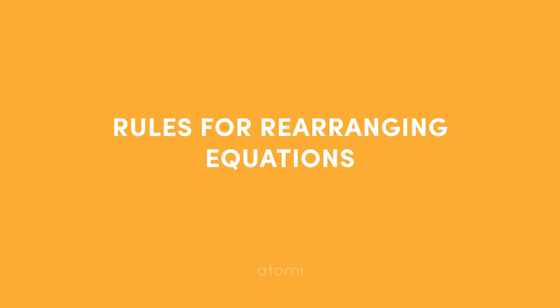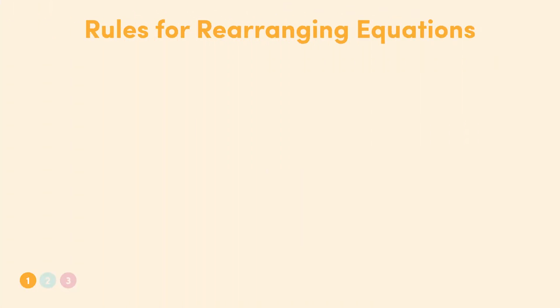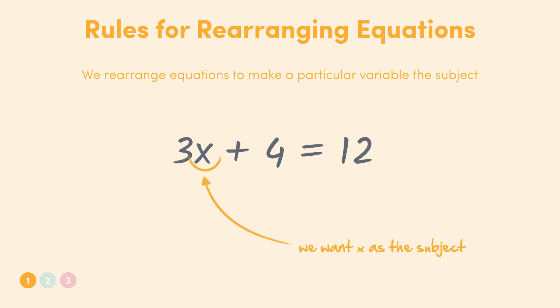When we're rearranging equations, we need to remember a few basic rules. Let's take the equation 3x plus 4 equals 12 so we can apply these rules to something as we go. In general, when you're rearranging an equation, it's to try and get a particular variable as a subject. So for our example, we'll use these rules to get x, our unknown variable, on its own on one side of the equation.